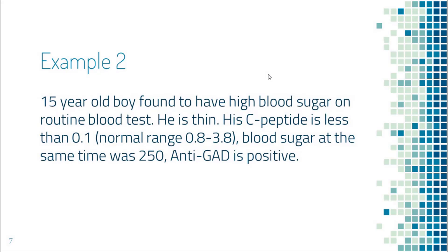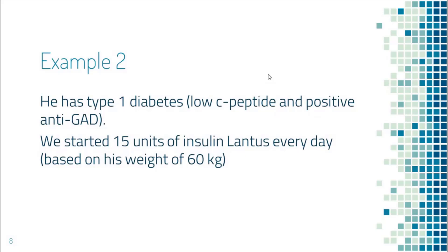The next example is a 15-year-old boy found to have high blood sugar. He is thin. His C-peptide level is very low, but at the same time his blood sugar was high, and anti-GAD is positive. Normally you would expect C-peptide to be high when blood sugar is high, but his C-peptide level is very low — that means he is not able to produce a sufficient amount of insulin. A positive anti-GAD means that his pancreas is being killed by the immune system. Also, he is young and thin. His situation is very typical of type 1 diabetes, and he has to rely on insulin from outside to get blood sugar controlled.